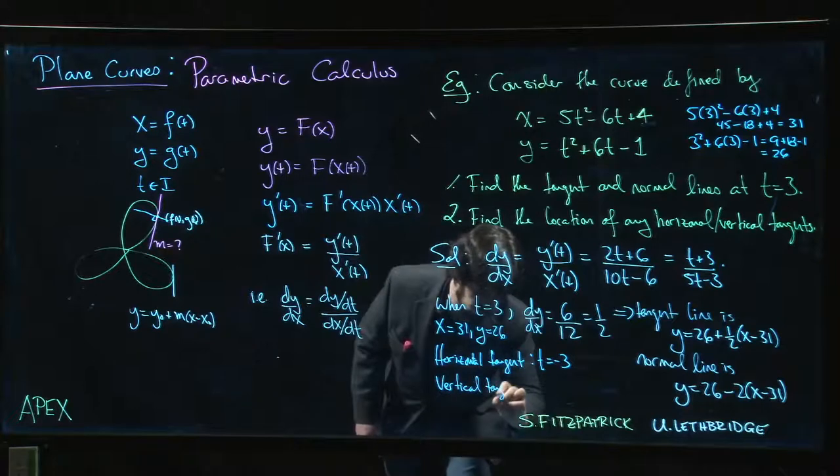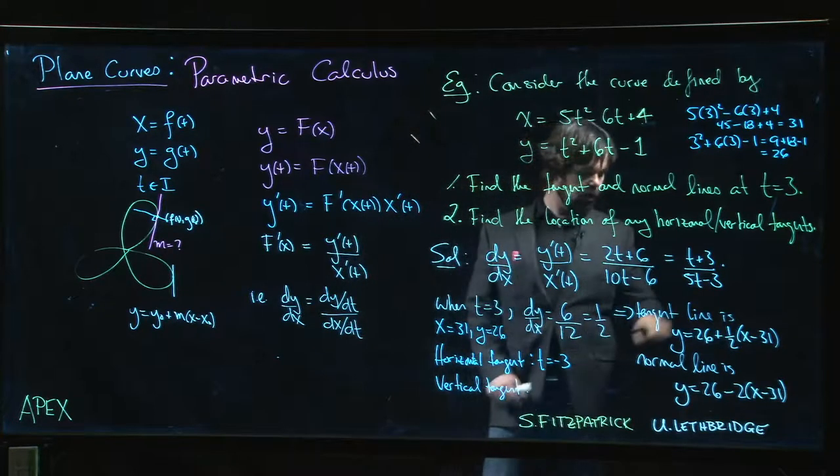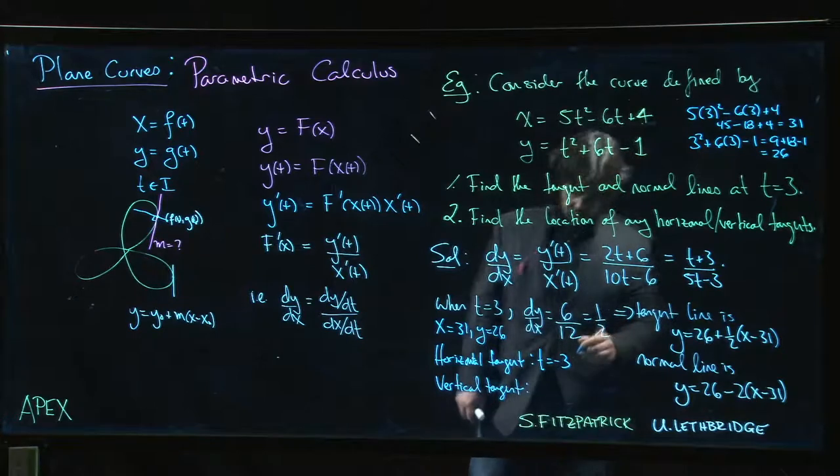Vertical tangent, we need the denominator to be 0, so t should be 3/5.